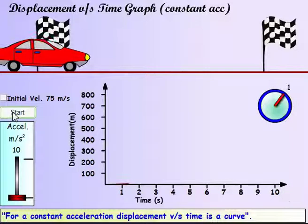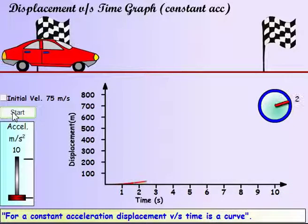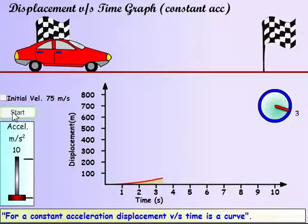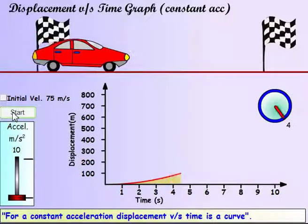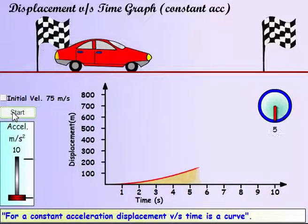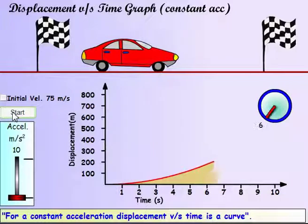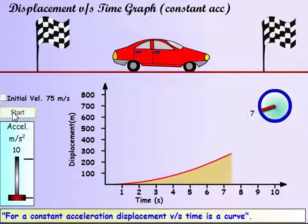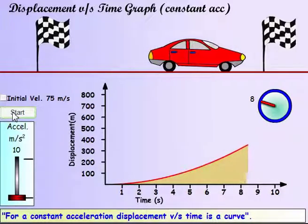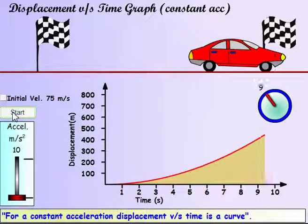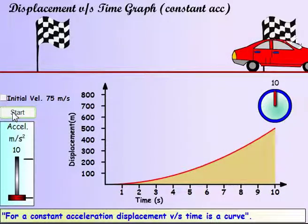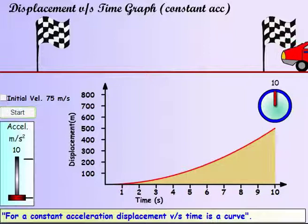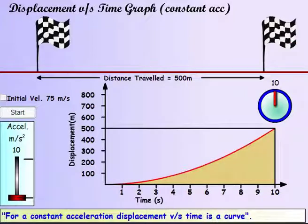The displacement-time graph is not a straight line when the car is accelerating — it will be a curve. The graph is a straight line when the car travels at constant velocity.